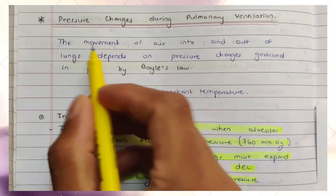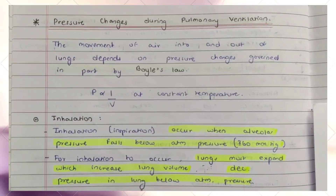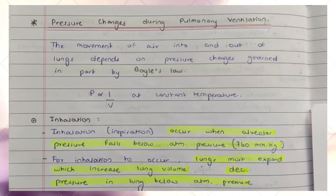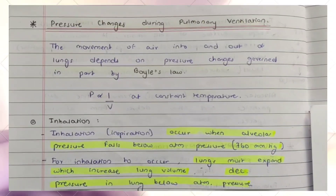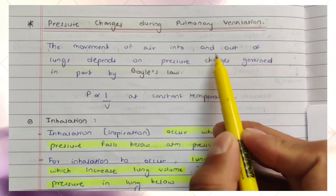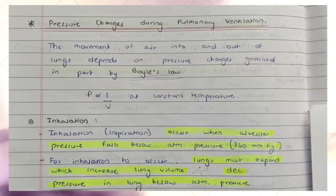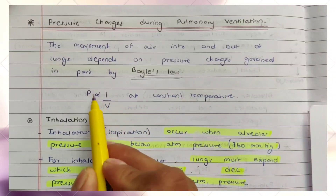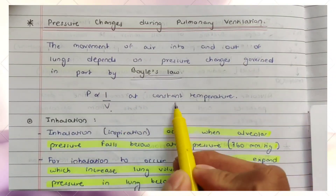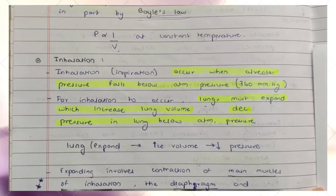Today we will be talking about pressure changes in pulmonary ventilation — breathing, inspiration and expiration, inhalation and exhalation. The movement of air into and out of the lungs depends on pressure changes governed by Boyle's Law. According to Boyle's Law, pressure is inversely proportional to volume at a constant temperature, meaning if pressure increases, volume decreases.